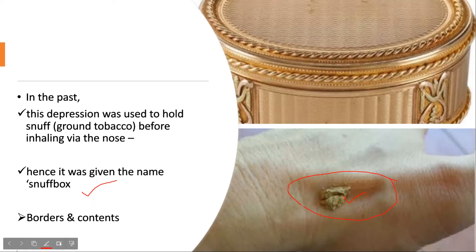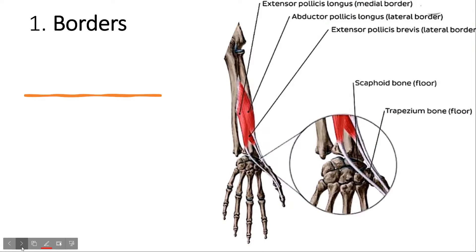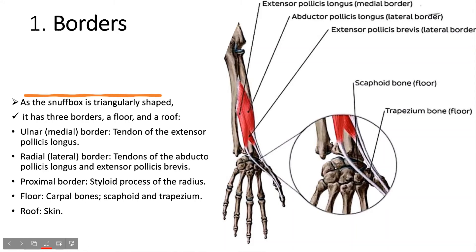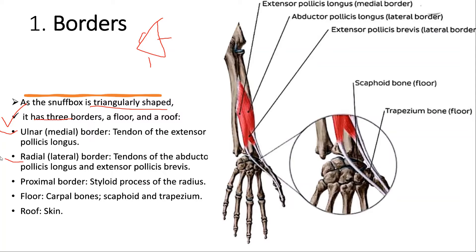Now let's see its borders and contents. Because it is a triangular area, it has three borders — the ulnar border, the radial border, and the proximal border — along with a floor and a roof. You can see here the ulnar border, the radial border, and the proximal border.